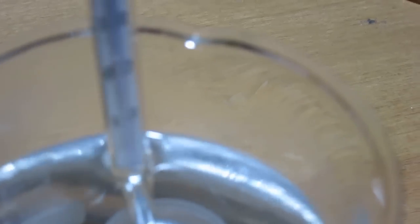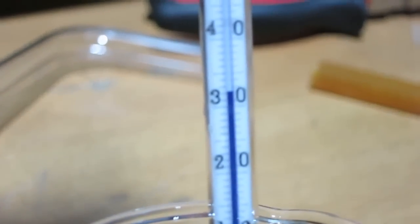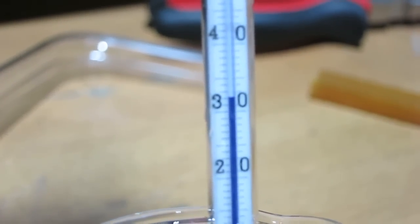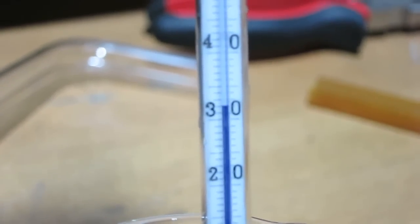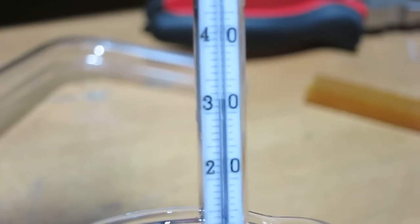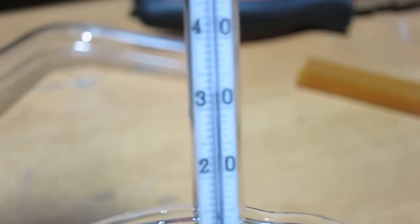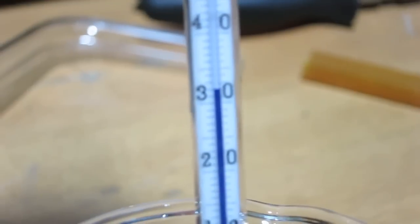I put a thermometer into it to measure the temperature of the gallium. The thermometer drops to 30 degrees - exactly 29.7 or so. That's 30 degrees, the melting point of gallium.